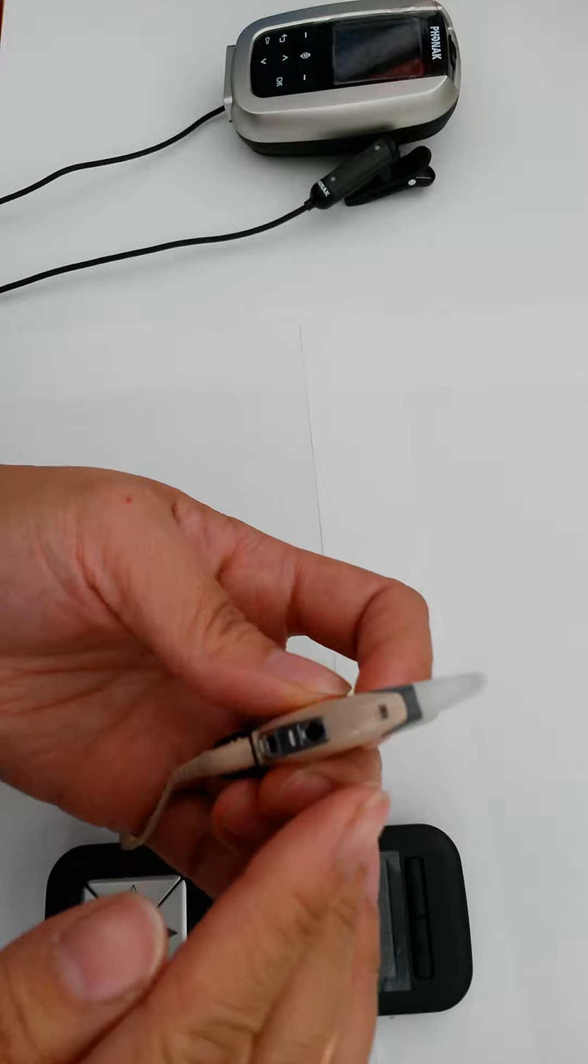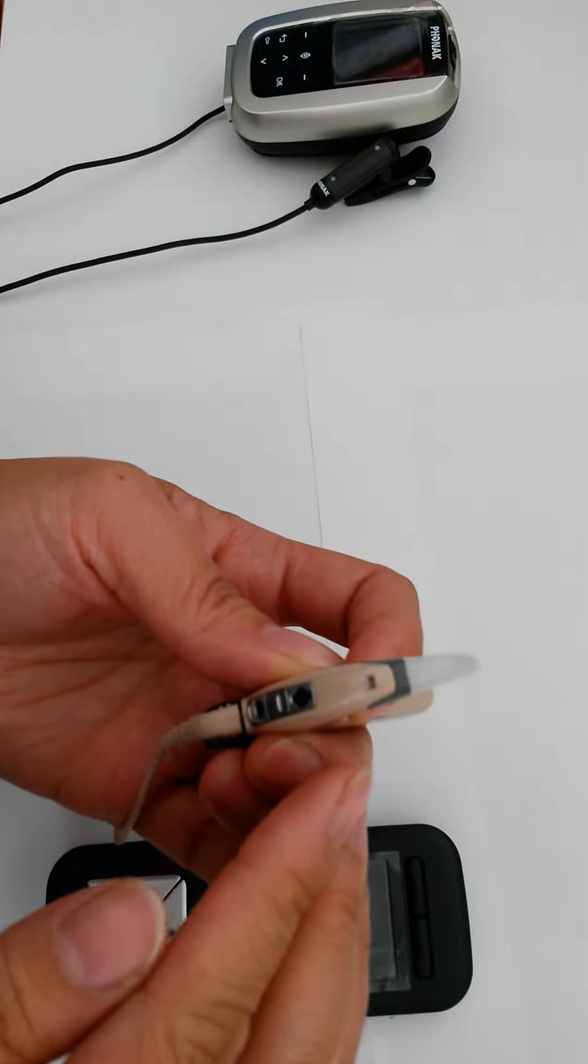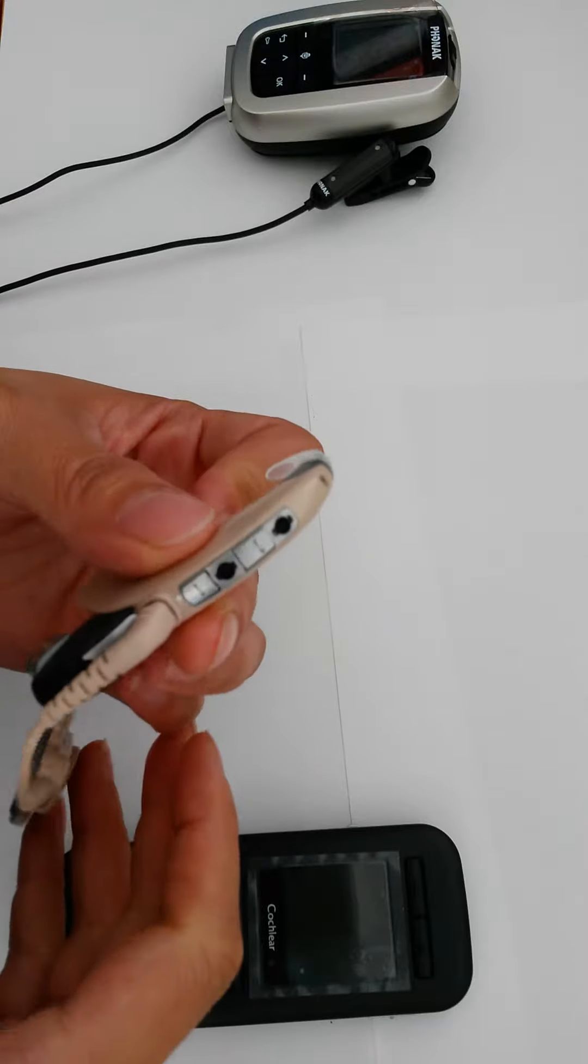Look for two very brief blue flickering lights on the ear hook of the processor, which indicate the processor is now in accessory mode.